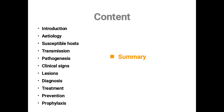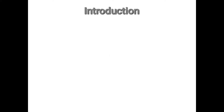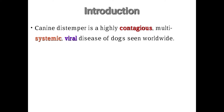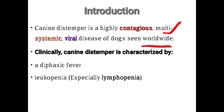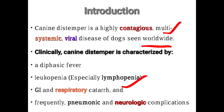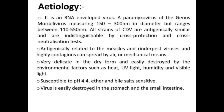As an introduction, canine distemper is a highly contagious multi-system viral disease of dogs, seen epidemiologically worldwide. Clinically, canine distemper is characterized by a diphasic fever — fever occurs one day and not the next — along with leukopenia, especially lymphopenia, gastrointestinal and respiratory catarrh, and frequently neurological complications.